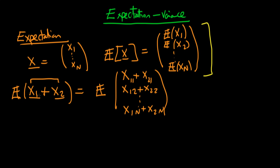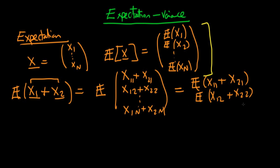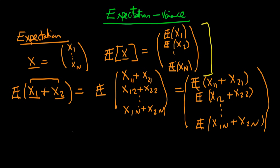That's just summing each of the elements to begin with. Then, because of the way the expectations operator is defined on a random vector, the top element becomes the expectation of x11 plus x21, the second element is the expectation of x12 plus x22, continuing down to the expectation of x1n plus x2n. Because the expectations operator is a linear operator on random variables, we can actually separate out each of these terms.